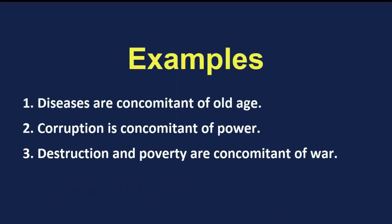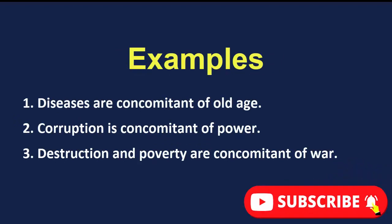Let's see some examples. Our first example is: 'Diseases are concomitants of old age' — meaning diseases are connected to old age; as people reach old age, diseases come along with it. The second example is: 'Corruption is concomitant of power.'